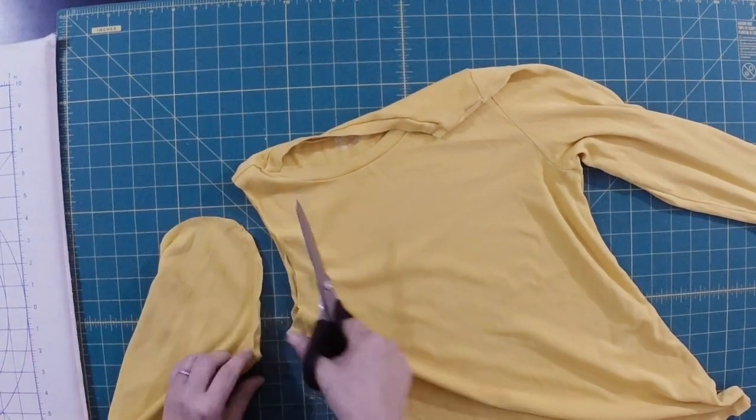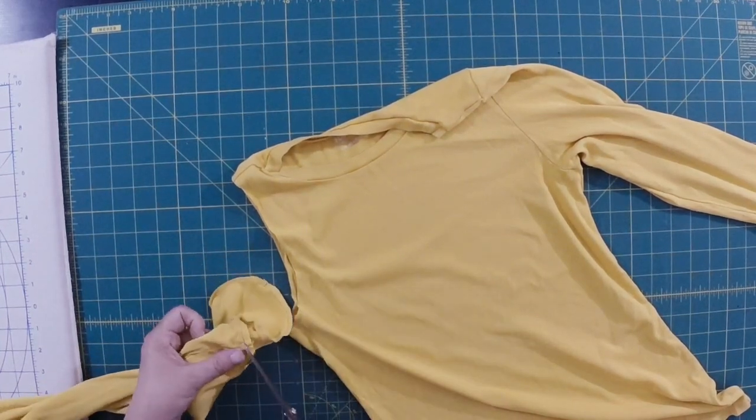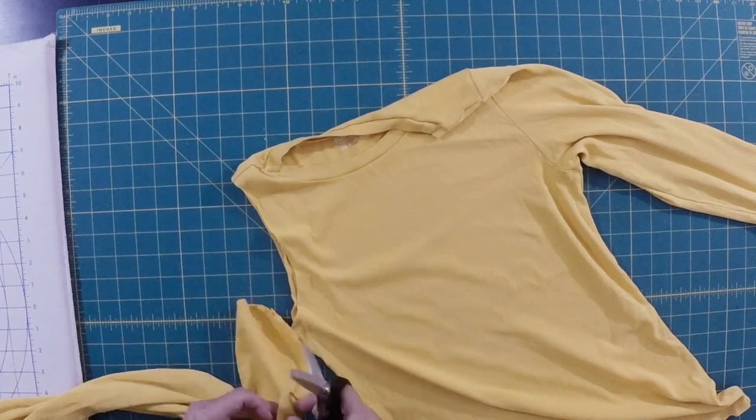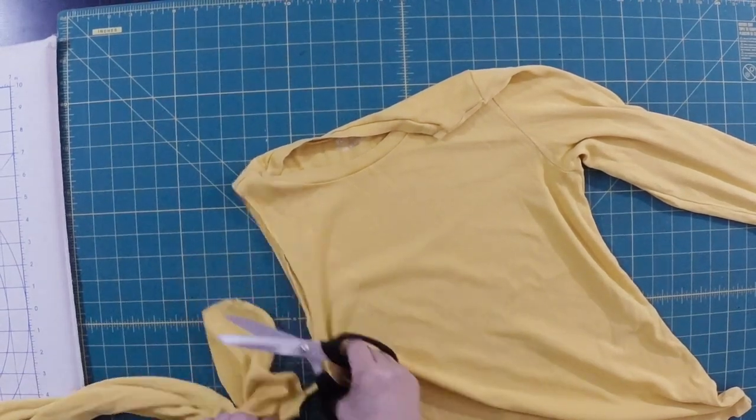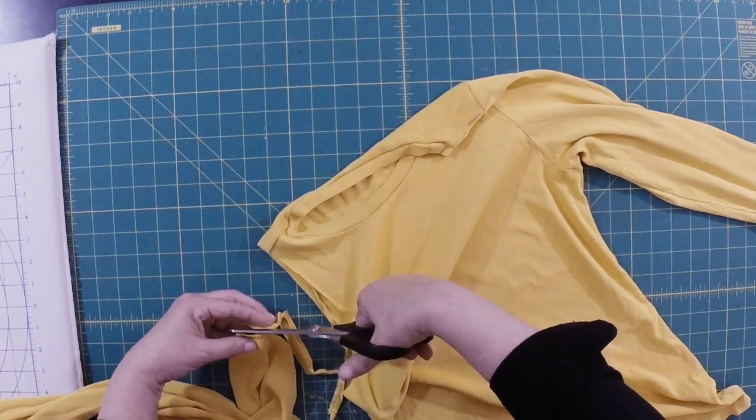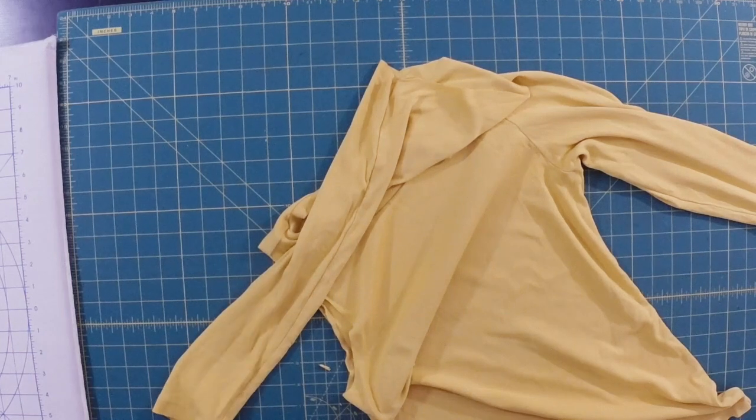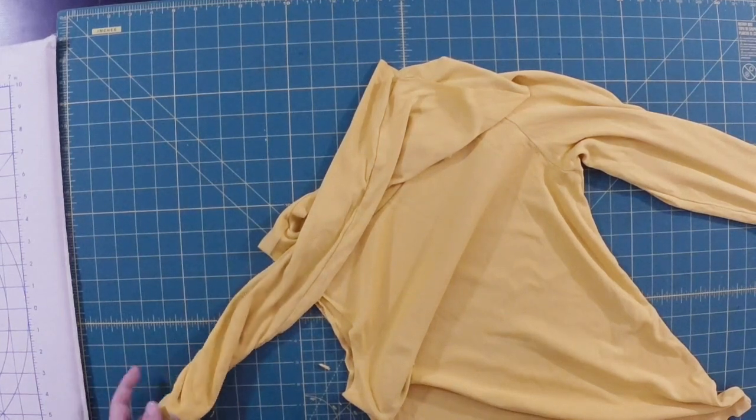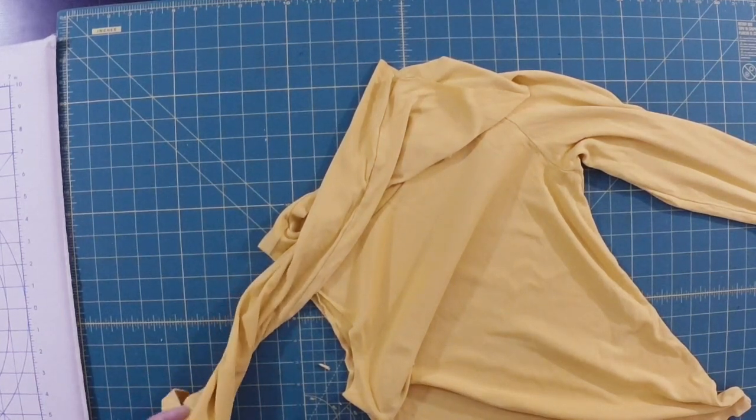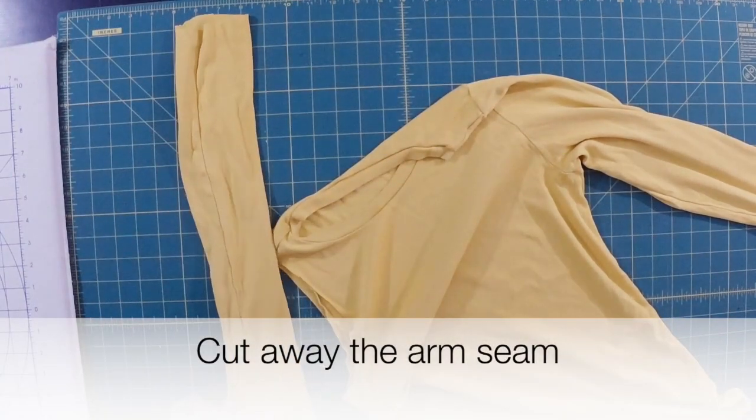But you want to cut off the seam entirely so that it's flat. You don't want any of that seam. Stay close to the seam line and I also cut off the hem. And then I cut down the arm seam.